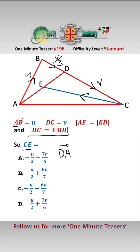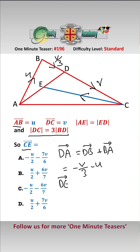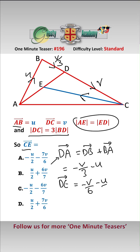Now let's have a look at DA. DA is equal to DB add BA — same path — and therefore that equals minus V over 3, because we're going in the opposite direction of BD, minus U. Therefore DE, the vector DE, is going to be half of DA, because we know that AE equals ED. So that is going to be equal to minus V over 6 minus U over 2.